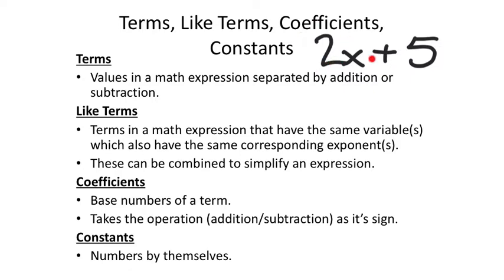If you look at an expression like 2x plus 5, this would have two terms: the 2x is a term and the 5 is a term. They're separated by addition or subtraction, not multiplication or division — so the 2 and the x are together as one term. Each term takes the operation to its left as its sign, so a plus indicates positive 5, and a minus would make it a negative 5.